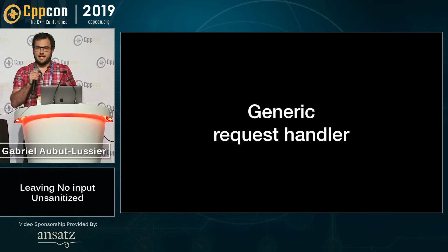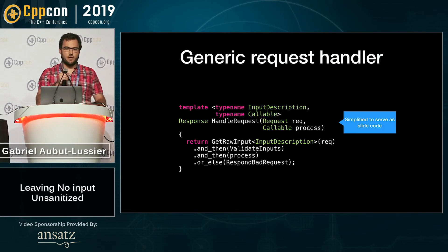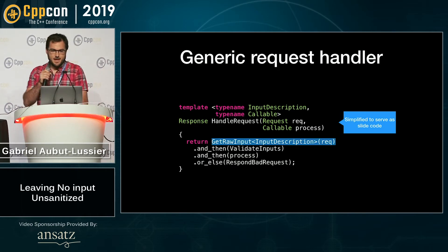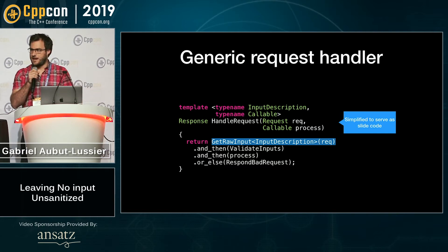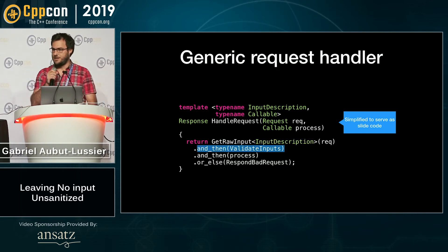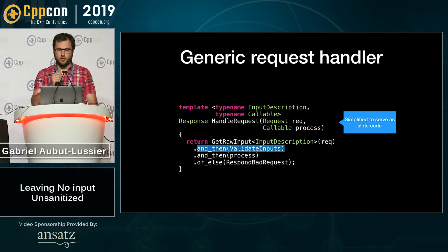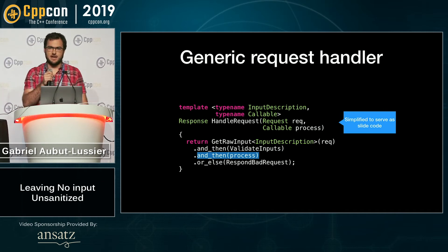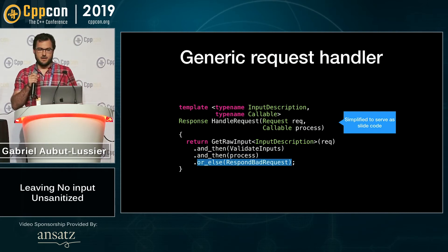In order to instantiate that generic request handler, let's look at how it may look like. This version is a bit simplified compared to the real proof of concept, but it will help us walk through the steps. The first step is using the input descriptions we provided earlier to extract raw data from our HTTP request object. Then, once every single input has been successfully extracted and none of them is missing, we can proceed to validation. Every single input is validated according to its type. Once every validation step is passing, we invoke the lambda with the validated inputs, knowing we can safely execute our business logic. If anything in that chain of events fails, we respond with a bad request.